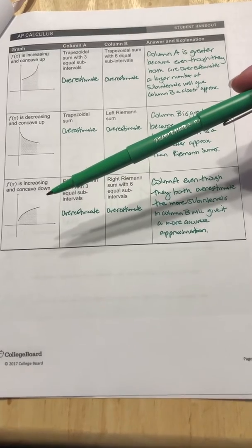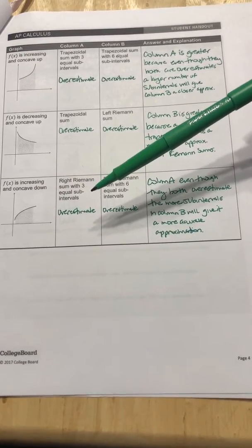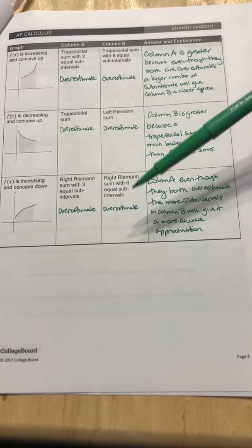And then this one says f of x is increasing and concave down. So we have a right Riemann sum with three equal sub intervals and a right Riemann sum with six sub intervals.